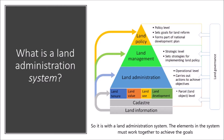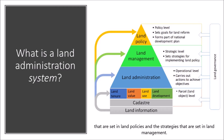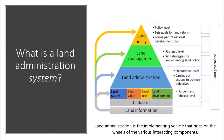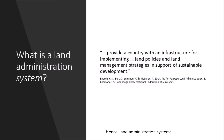So it is the same thing with a land administration system. The elements in the system must work together to achieve the goals that are set in land policies and the strategies that are set in land management. Land administration is the implementing vehicle that rides on the wheels of the different interacting components. Land administration systems provide a country with an infrastructure for implementing land policies and land management strategies in support of sustainable development.